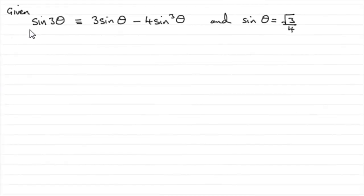Now for this part of the question we're given that sin 3θ is identical to 3 sin θ minus 4 sin³ θ, and we're also told that sin θ is this exact value here, root 3 over 4, and we've got to get the exact value for sin 3θ.